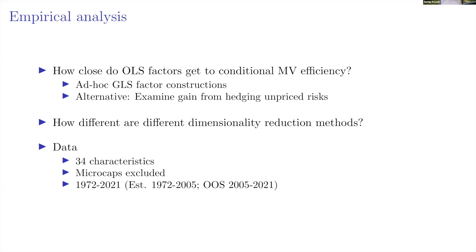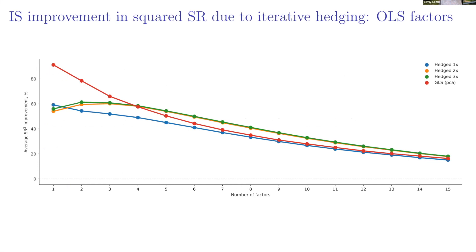On the x-axis we consider models with different numbers of factors — three, four, five, and so on — averaging over randomly drawn factor combinations. The blue line shows that for the average three-factor model, hedging the original factors just once already produces a massive 50% improvement in squared Sharpe ratio. Hedging two more times gets to about 60%, with little improvement beyond that.